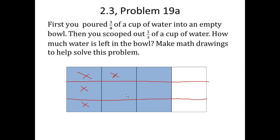So how much water is left? Well, we have 1, 2, 3, 4, we have 5 sections that are left out of that entire cup of water. There were 12 sections in all, so we have 5 twelfths of a cup of water that is left in the bowl.